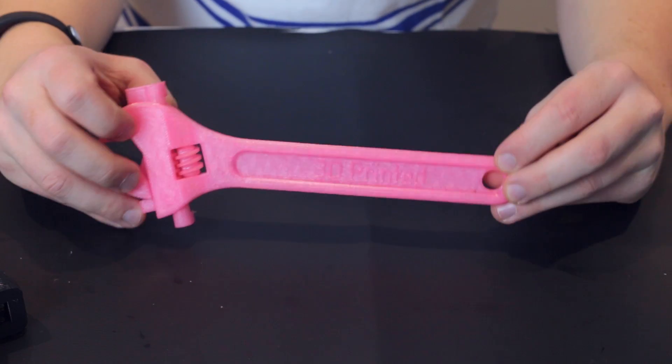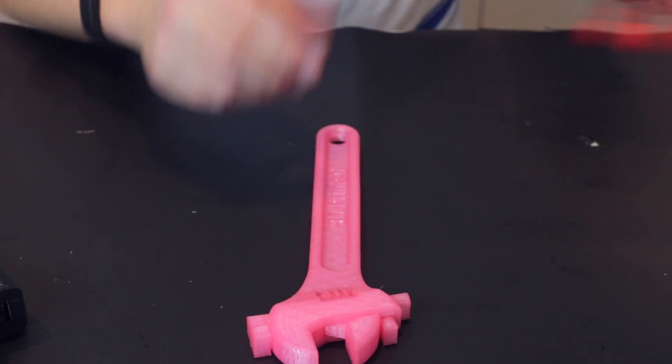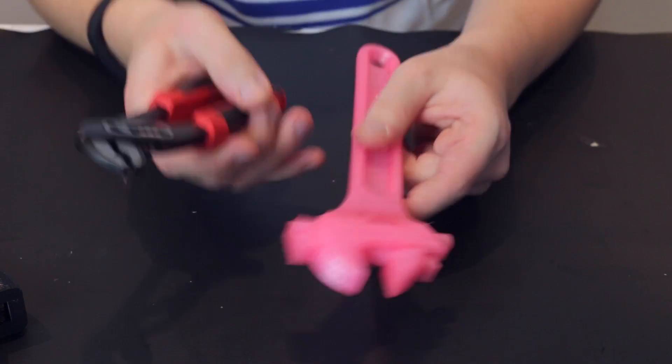So here we have the 3D printed wrench by Daniel Norrie and this is printed on the duplicator 4S from Creative Tools.